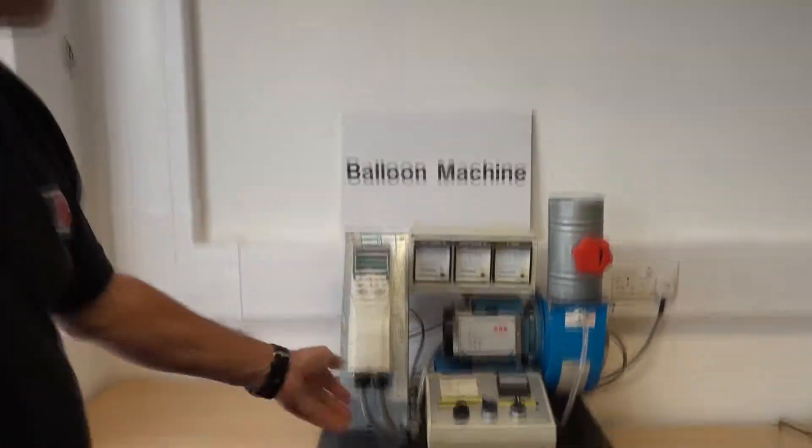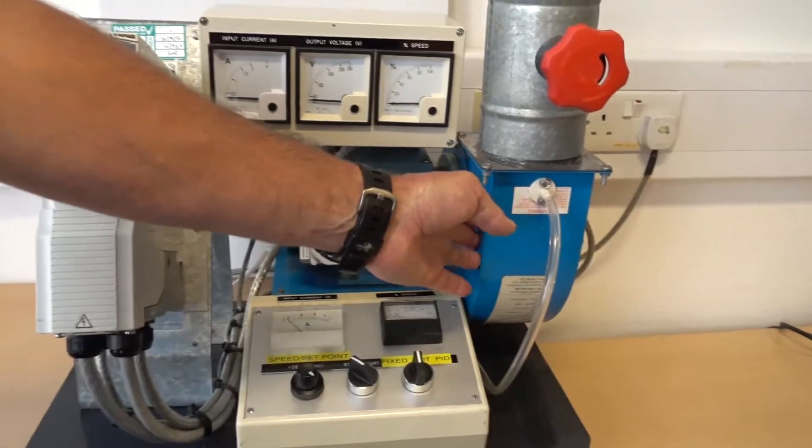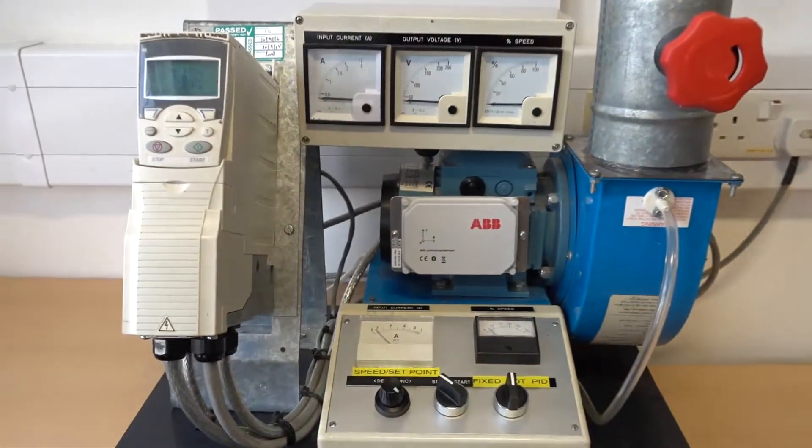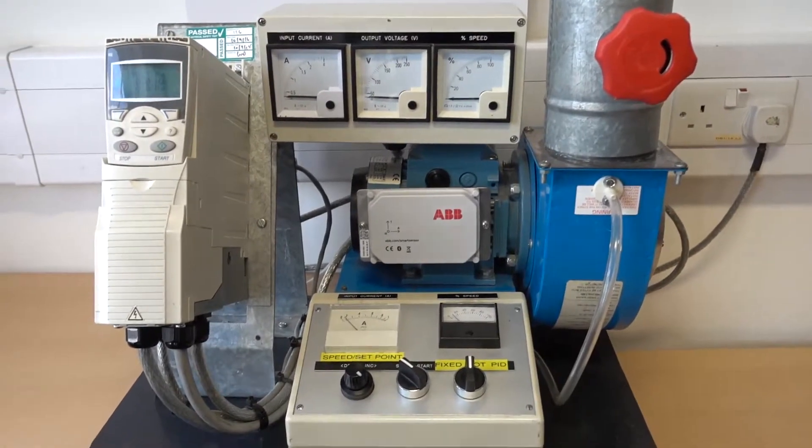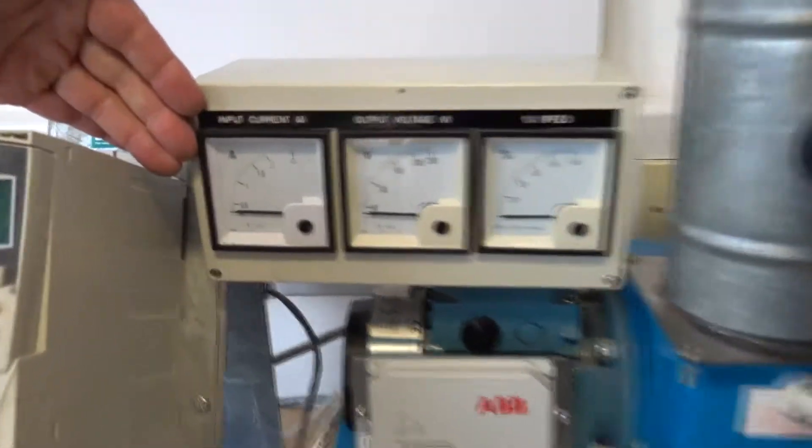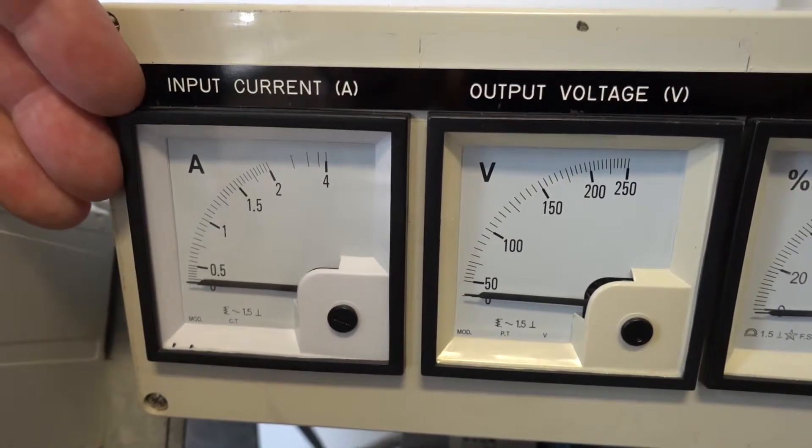This is an inverter driving a motor connected to a fan. I'm going to switch on the motor, let it settle and you'll be able to see the current drawn on this ammeter. This represents the power consumed.